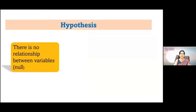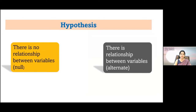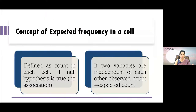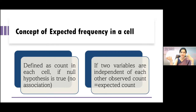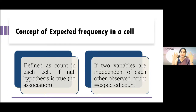The null hypothesis for this chi-square test of association is that there is no relationship between the variables, whereas the alternate hypothesis says there is a relationship between the variables. The concept of expected frequency is: when you assume the null hypothesis is true and count based on that assumption, that is known as the expected count — the count in each cell if the null hypothesis is true, meaning there is no association and the two variables are independent of each other.